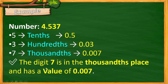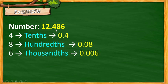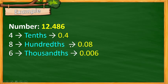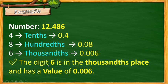Now we have 12.486 thousandths. 4 is in the tenths place, therefore it is read as 4 tenths or 0.4. Then 8 is in the hundredths place, therefore we have 0.08 or 8 hundredths. Then digit 6 is in the thousandths place, therefore we have 0.006 or 6 thousandths.